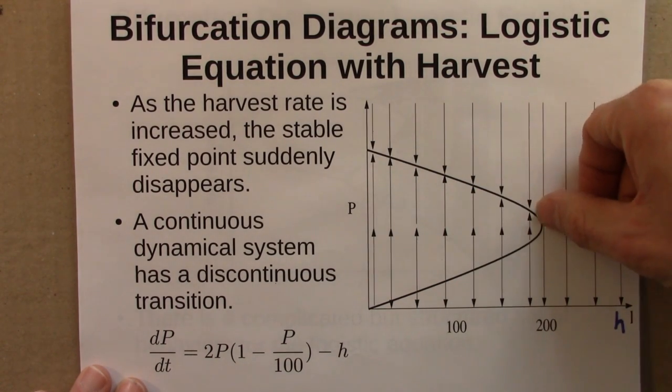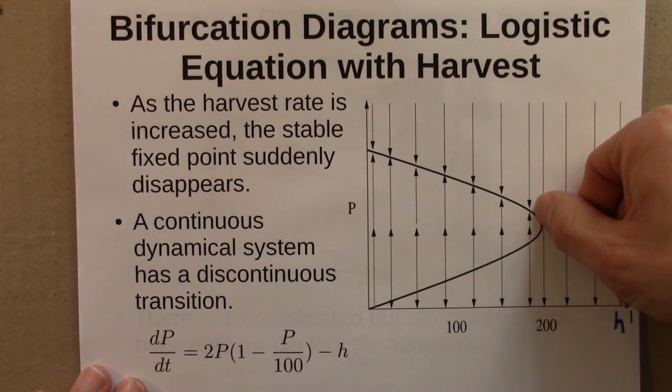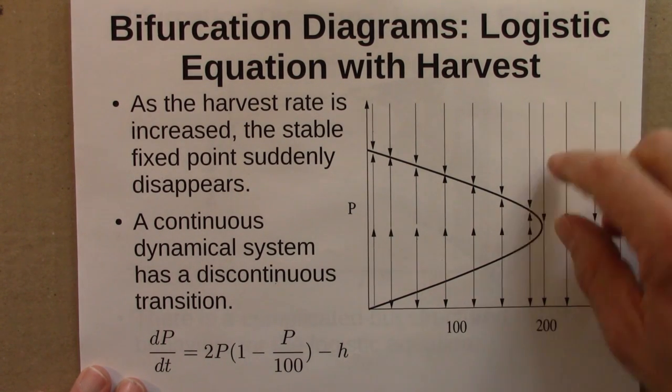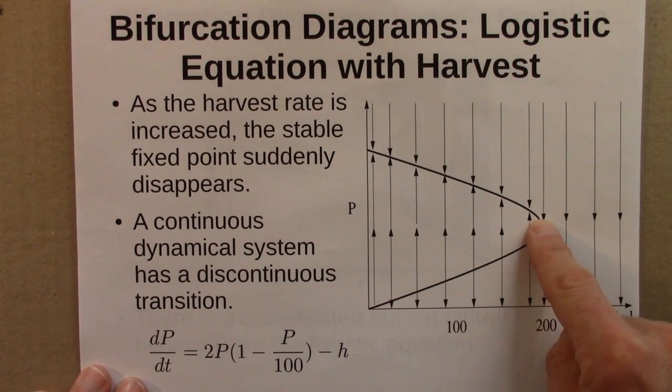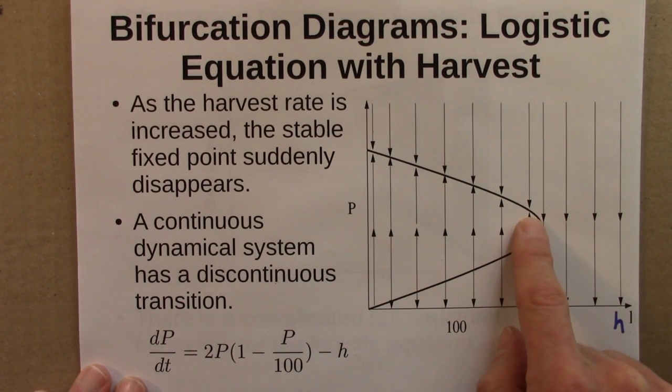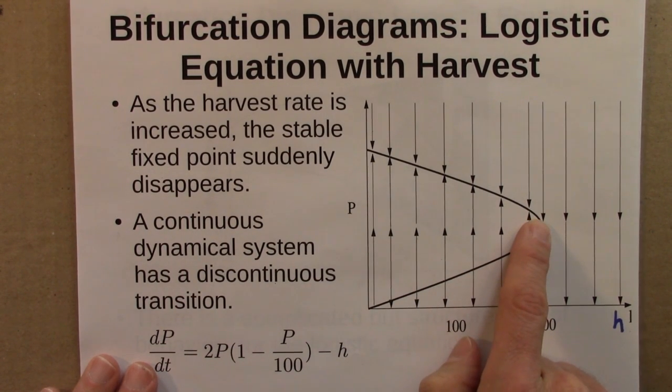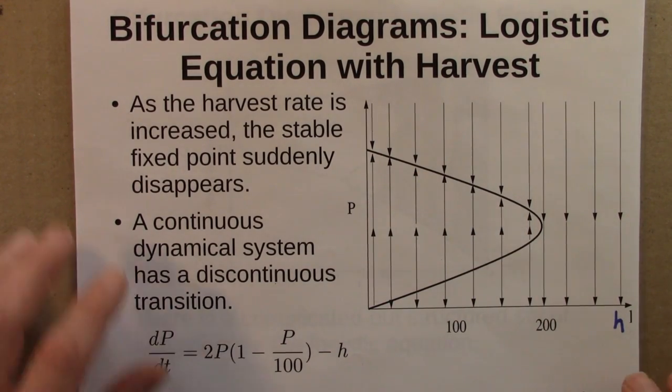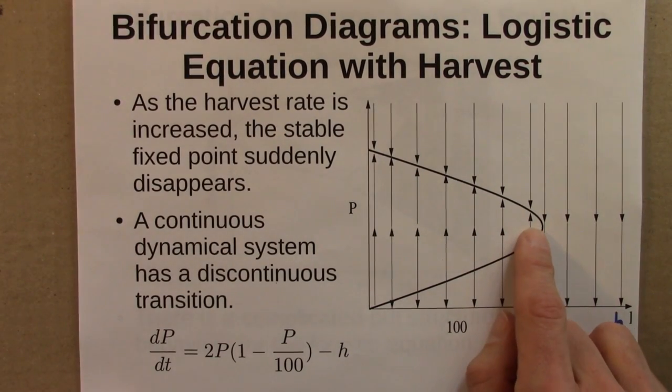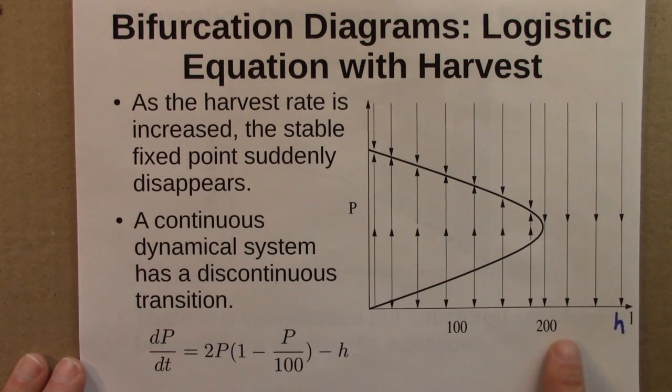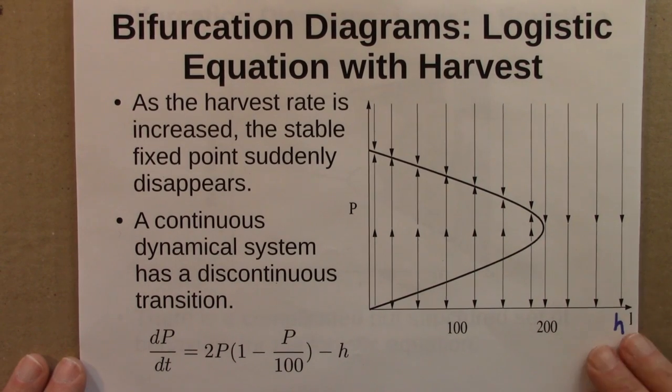But what's surprising is that when you're here and you make a tiny increase in the fishing rate, the steady state population crashes, in fact it disappears. So you have a small change in h leading to a very large qualitative change in the fish behavior. So this is an example of a bifurcation that occurs right here. It's a sudden qualitative change in the system's behavior as a parameter is varied slowly and continuously.